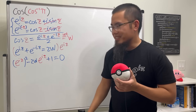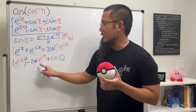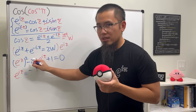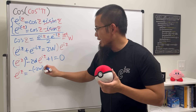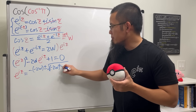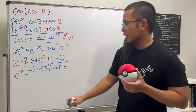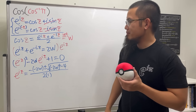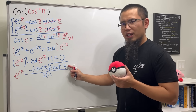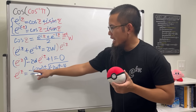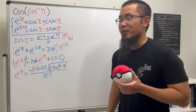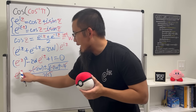The reason I put it down this way is because now we have a quadratic equation in terms of e to the iz. Using the quadratic formula gives us e to the iz equal to negative b, which is negative 2w, plus or minus the square root of b squared, which is negative 2w squared, minus 4 times 1 times 1, all over 2. Now negative 2 squared is 4 and we also have a 4, so we can factor that out — square root of 4 is 2. The 2's cancel throughout, so we get e to the iz equal to the simplified expression.